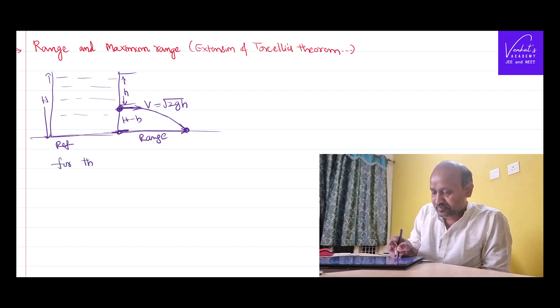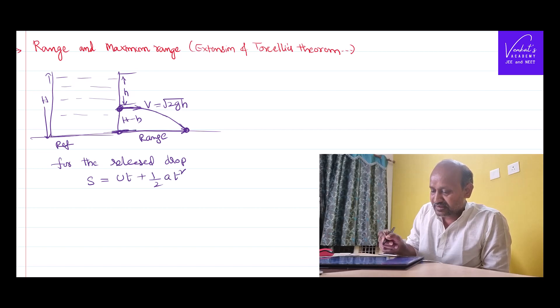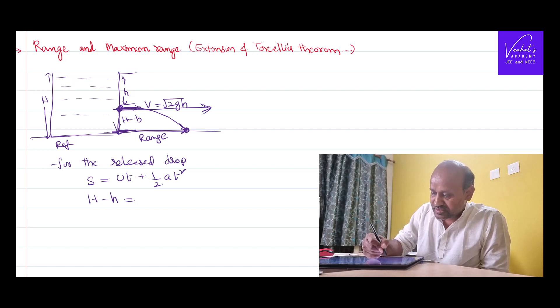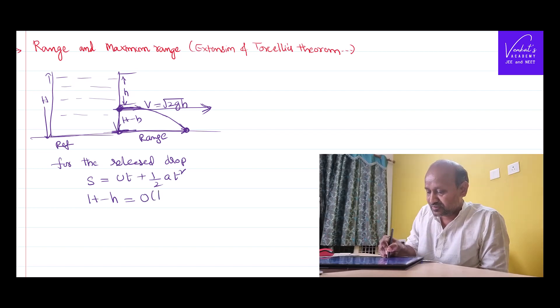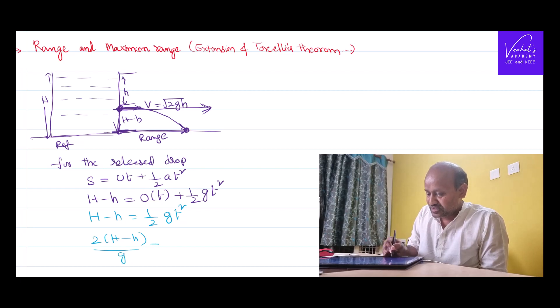For the released drop, I can use the formula S equal to UT plus half AT square. The S that is falling is H minus h. Be careful that the velocity we found is a horizontal velocity. In the vertical direction, velocity is 0. It's falling down, so acceleration is acceleration due to gravity. So H minus h equals half G T square. Therefore, 2(H minus h) divided by G is T square.